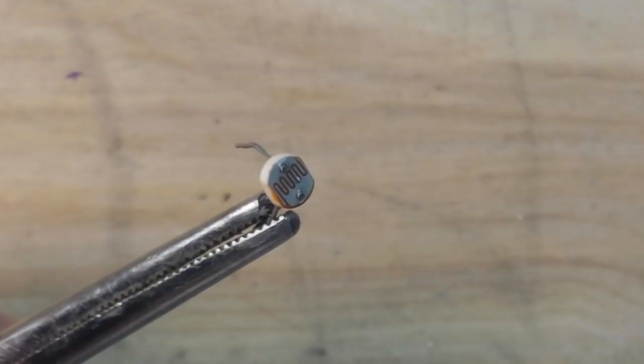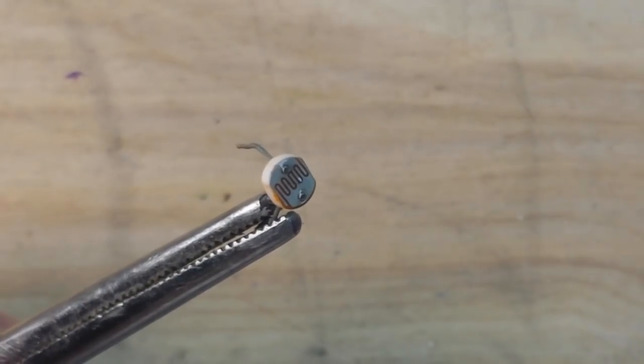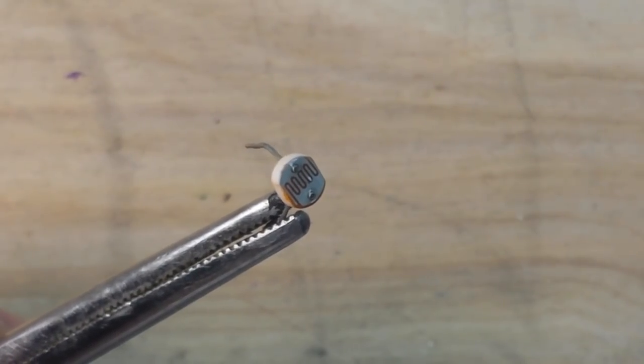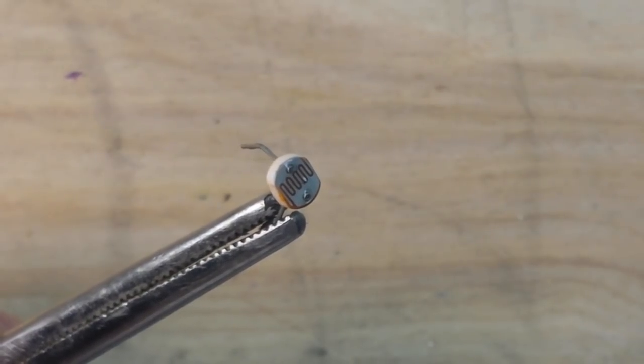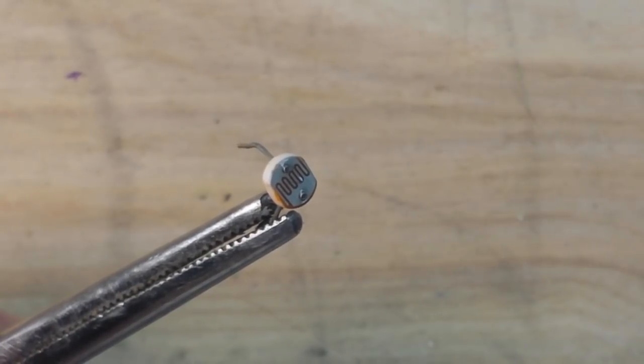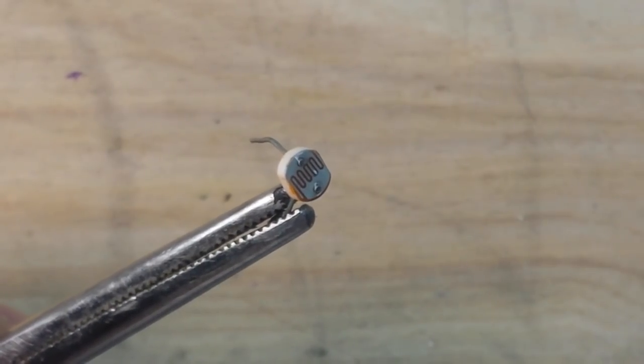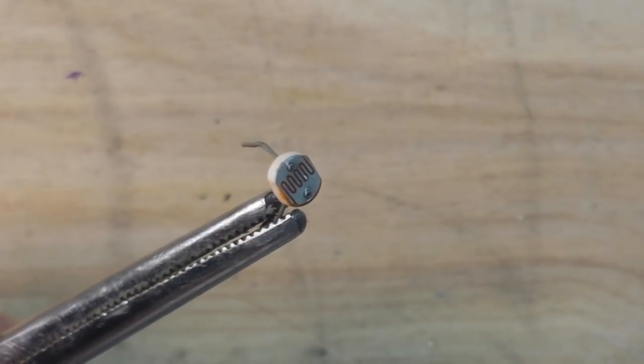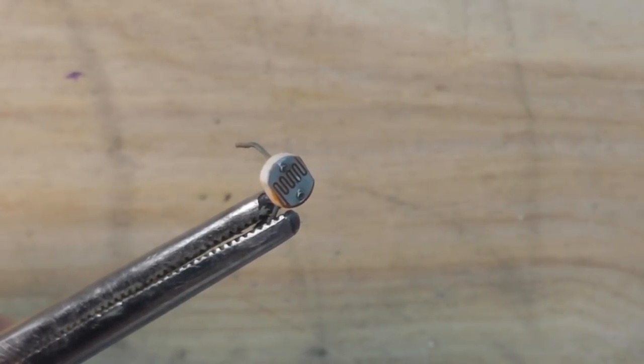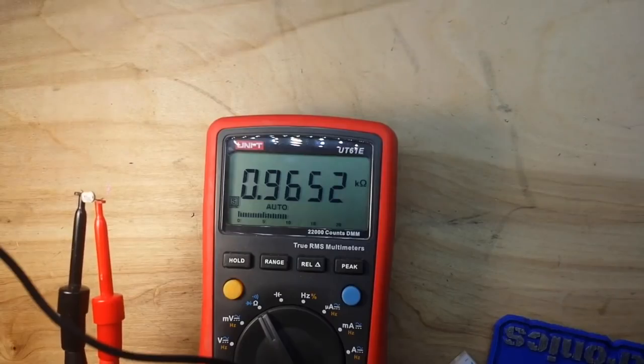People always ask for a practical example or application for these. What are they used for? Well, they're used a lot in streetlights, camera sensors, light meters, astronomy, spectrometers, lots of different things like that. So let me show you how they work.